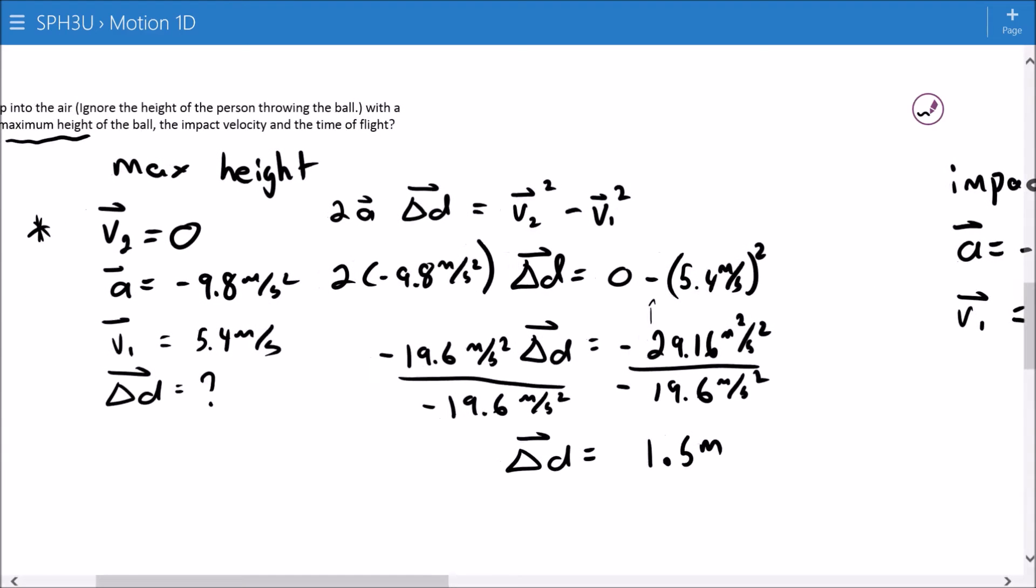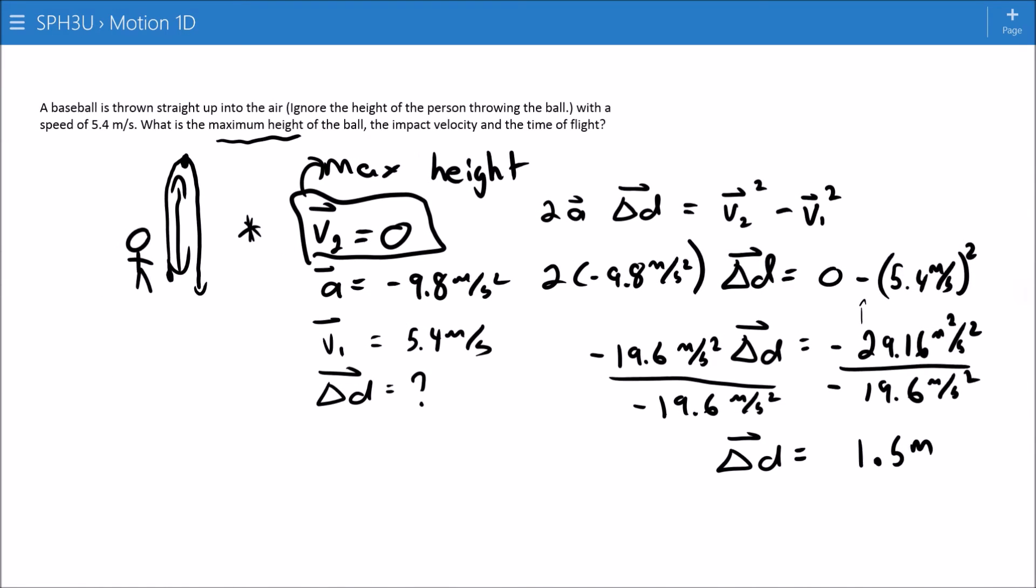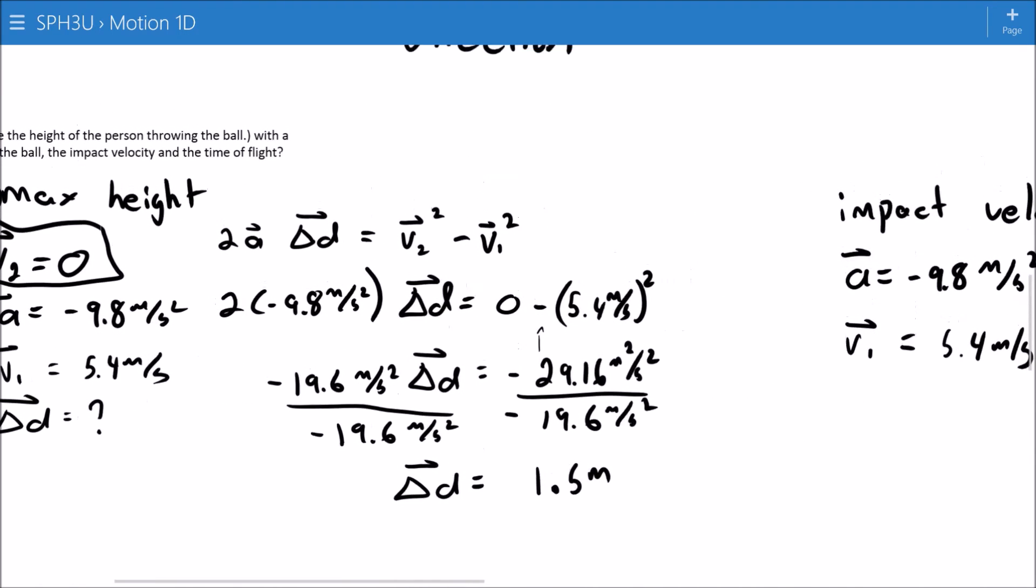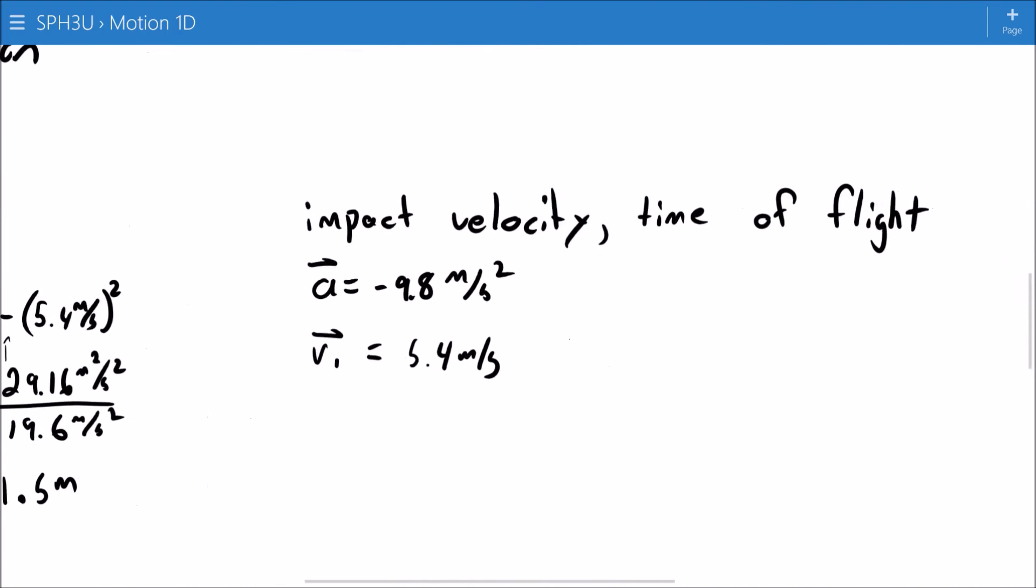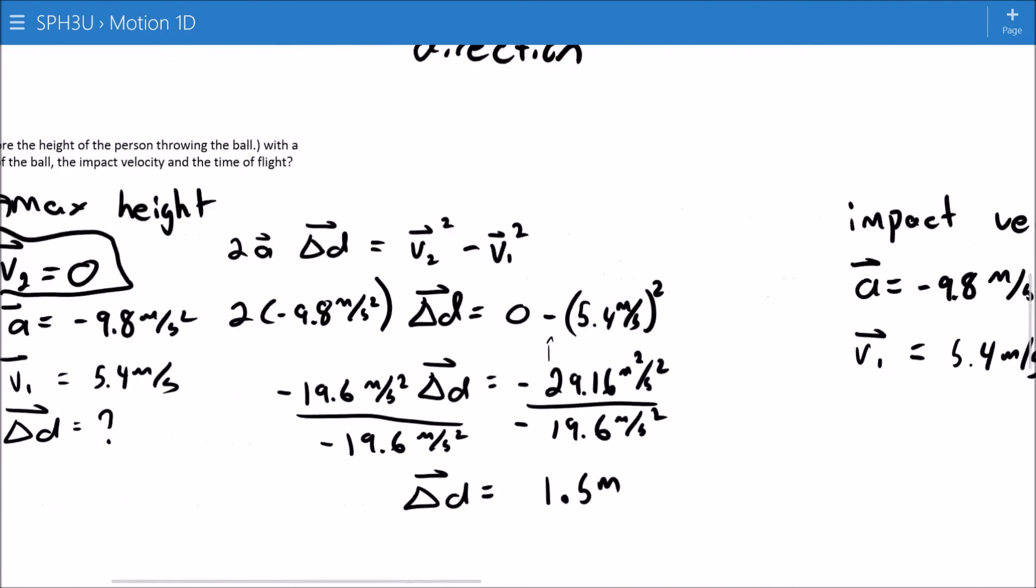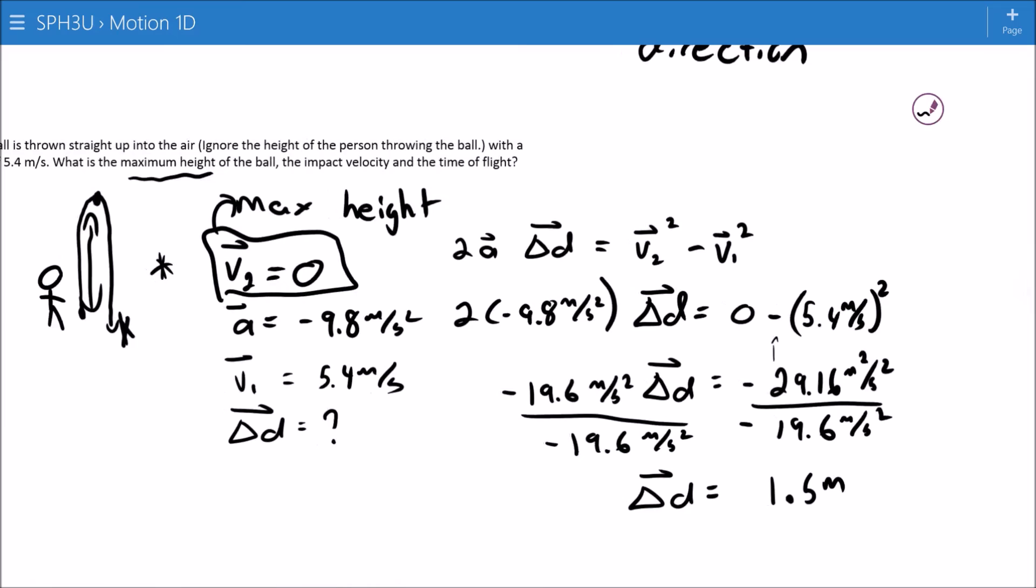But I can't use this. This V2 occurred because it was at the maximum height. That's when it went up and it was stopped and it was coming back around. For the impact velocity or the time of flight, I want to go all the way to this point in motion, which is when it hits the ground again. That's totally different from when it's at its maximum height. I can't use V2 equals zero.